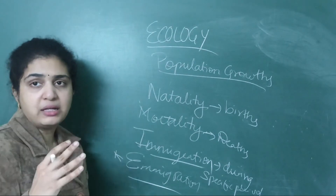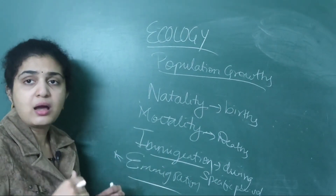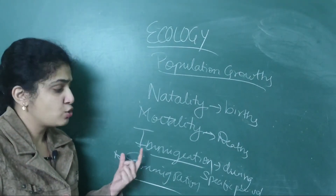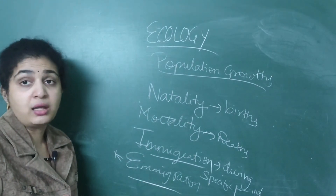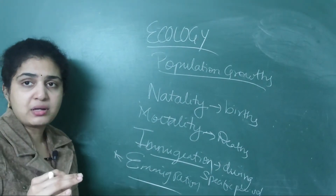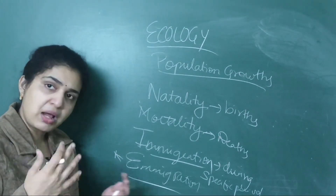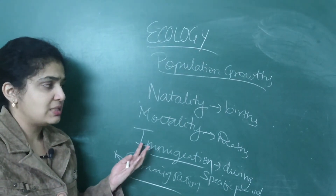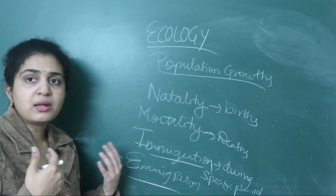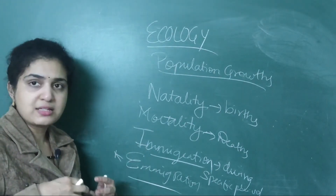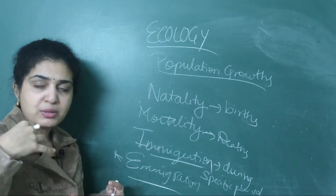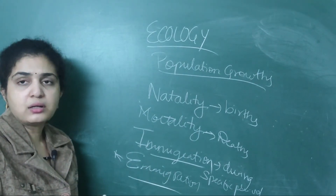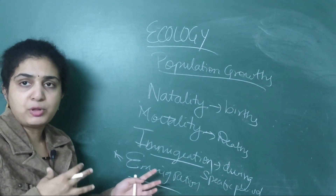Emigration means people moving out — how many people are moving from India to different parts of the world during a specific period. Immigration is movement into India; emigration is movement out of India. The key point to remember is that both are measured only during a specific time period.